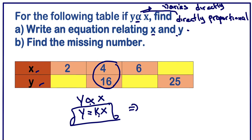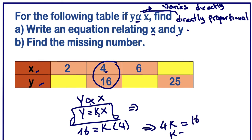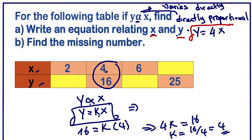Now we know y is 16, so we substitute: 16 equals kx. We can see x is 4, so 4k equals 16. Therefore k equals 16 divided by 4, which gives k equals 4. Now that we have k, we can write our equation: y equals 4x. This is the equation relating x and y.